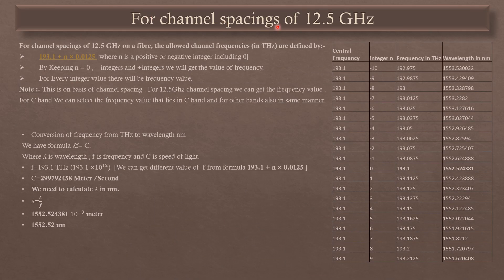For a channel spacing of 12.5 GHz, using the formula already discussed, we keep N equal to 0, minus 1, plus 1, and so on. With N equal to 0, we get the frequency 193.1 Terahertz. Converting to wavelength using lambda equals C divided by F, we get 1552.524381 nanometers, approximately 1552.52 nm.